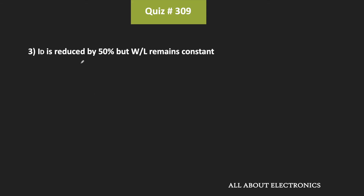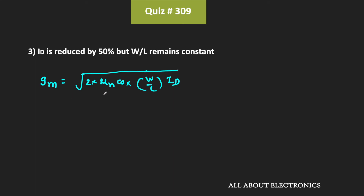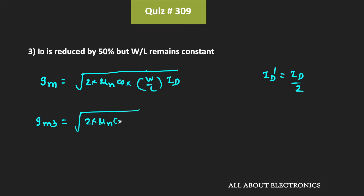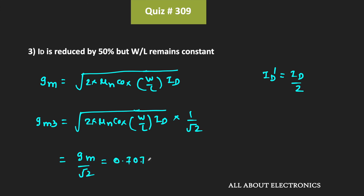In the third case, the drain current id is reduced by 50% but the W/L ratio is kept fixed. We use the expression gm = sqrt(2 × μn × Cox × (W/L) × id). The new drain current id' = id/2. The new transconductance gm3 = sqrt(2 × μn × Cox × (W/L) × id/2) = gm / √2 = 0.707 times gm.